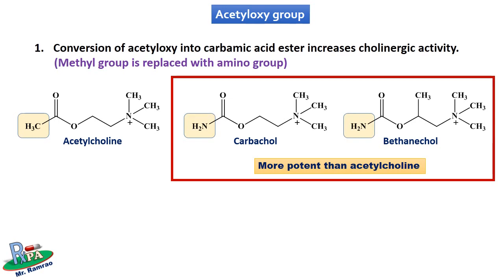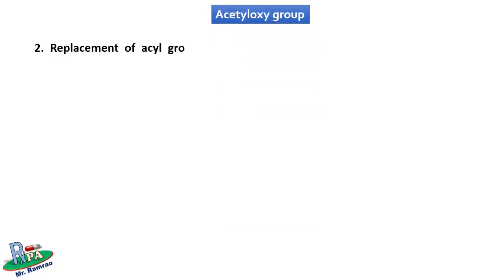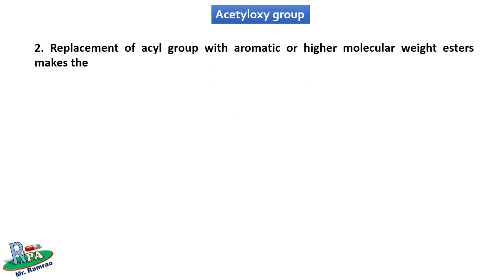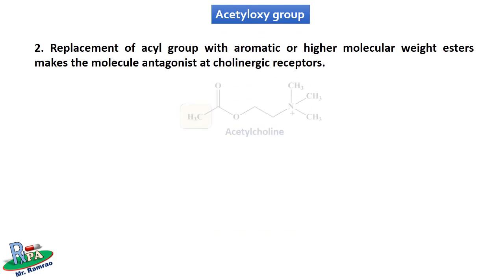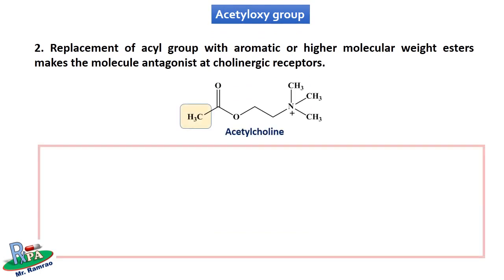The second point is that carbamic acid esters are more potent than acetic acid esters at cholinergic receptors. Replacement of the acyl group with aromatic or higher molecular weight esters makes the molecule an antagonist at cholinergic receptors, as shown in the following structures.